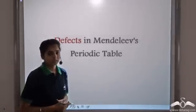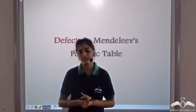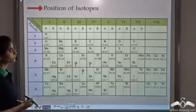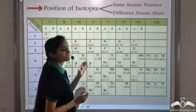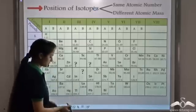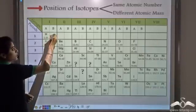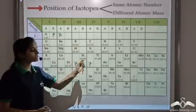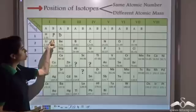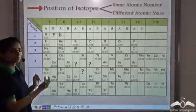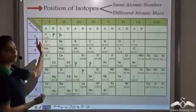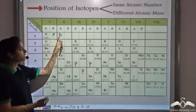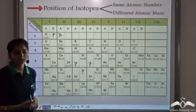In spite of so many merits, there are some defects in Mendeleev's periodic table. The first is the problem of isotopes. Isotopes are elements with the same atomic number but different atomic mass. Hydrogen has three isotopes: hydrogen, protium, and deuterium. Since Mendeleev placed elements in increasing order of atomic mass, one position belongs to one element. So the isotopes protium and deuterium have no place in the periodic table and cannot be accommodated.